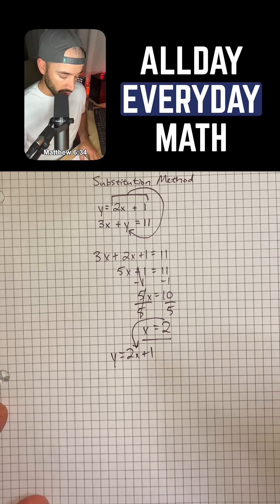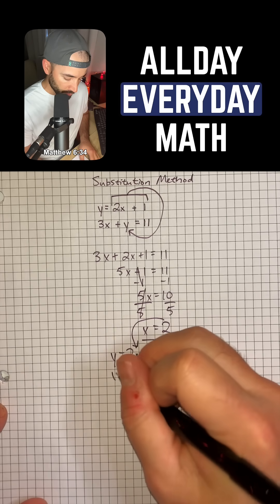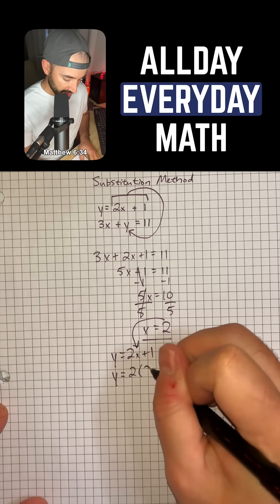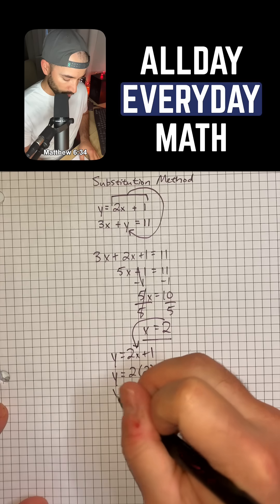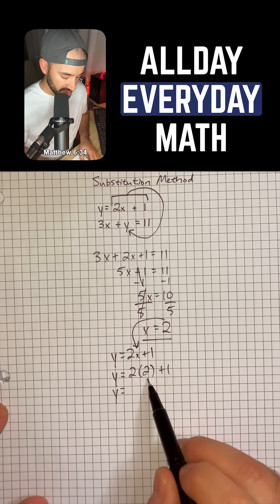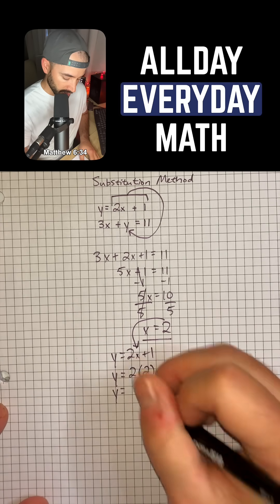So that's going to give us y equals 2 times 2 plus 1. And so y is equal to 2 times 2, which is 4, plus 1, which is 5.